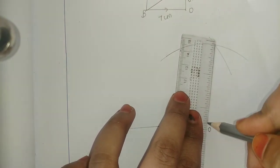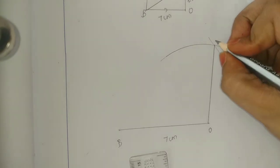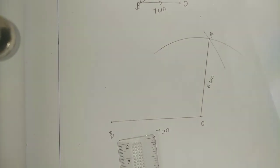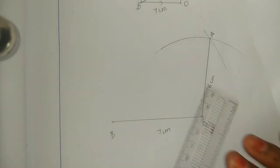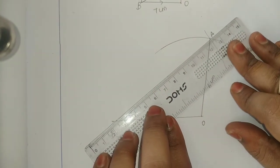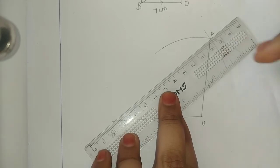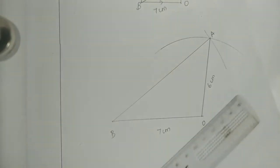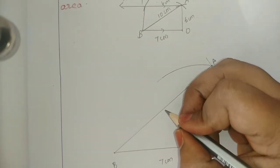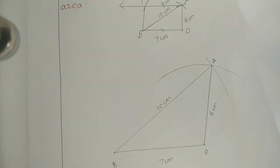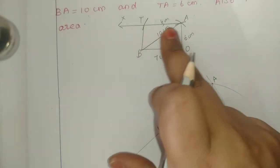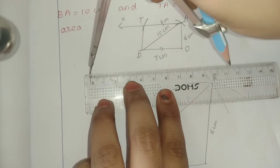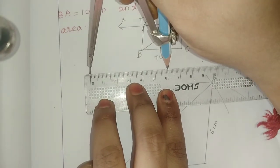Join point A. Is OA 6 cm? Clear. Next, join the second point. TA is 6 cm, so here we are going to measure 6 cm.